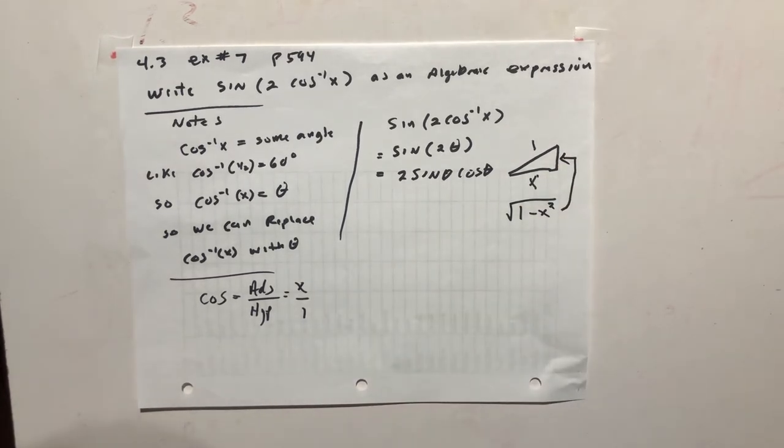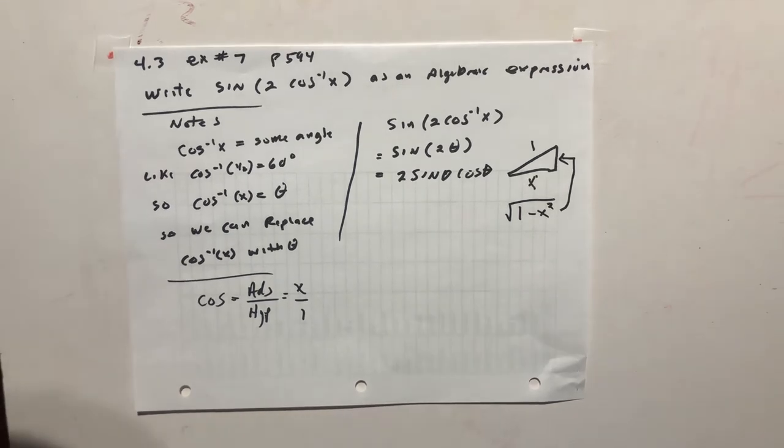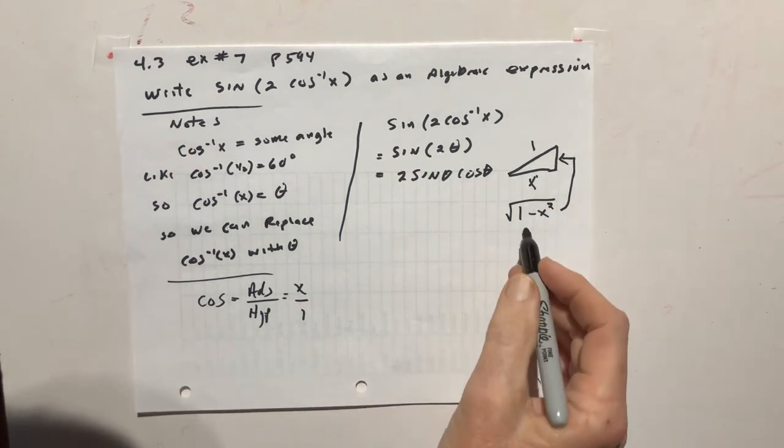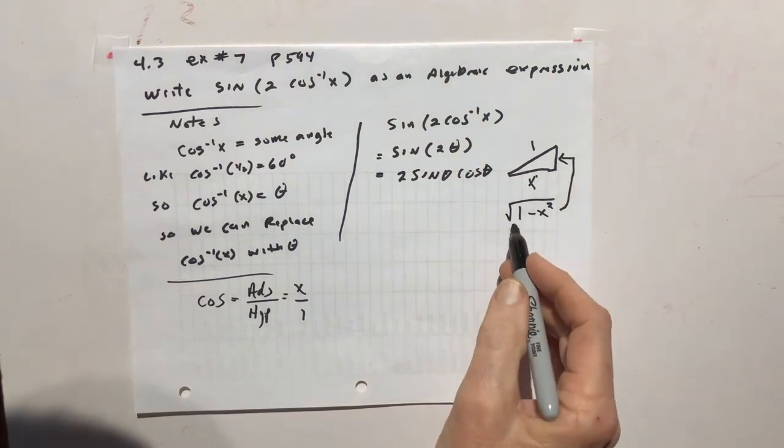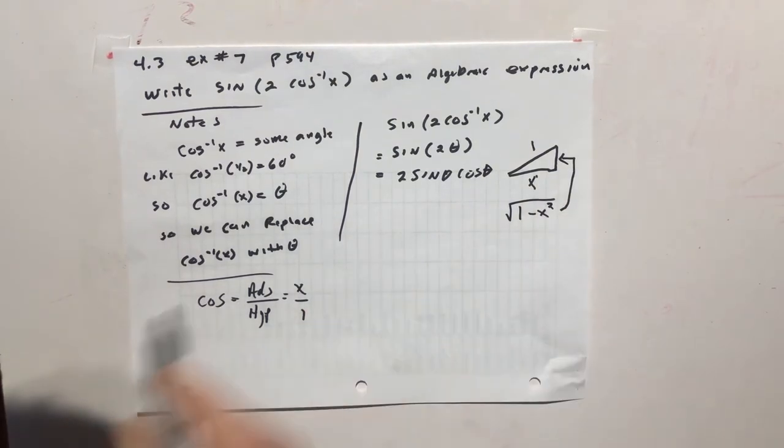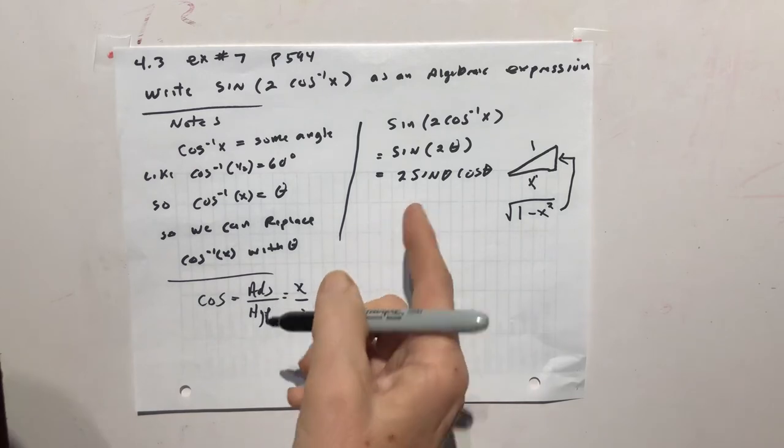So now we know all three sides of the triangle. Well, we don't really know them, but we've got a variable for them. We do know the hypotenuse is 1, the adjacent is x, and the opposite is the square root of 1 minus x squared. So now we can finish this problem.